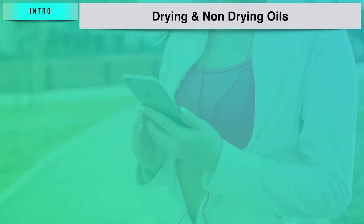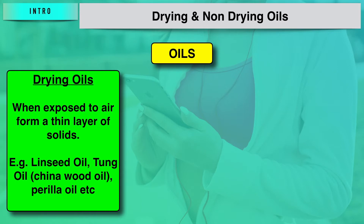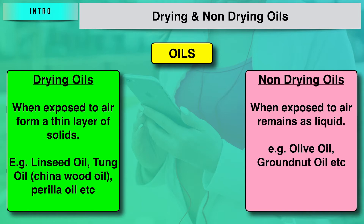Certain oils such as linseed oil, tung oil which is commonly known as china wood oil, perilla oil, and many other such oils are called drying oils. Because these oils, when exposed to air in the form of thin layers, form hard and tough water-insoluble solids. This process of converting a layer of oil into a water-insoluble solid is termed as drying, and the associated oils are known as drying oils. Certain other oils like groundnut oil and olive oil do not have the tendency to dry on exposure to air, and so such oils are called non-drying oils.